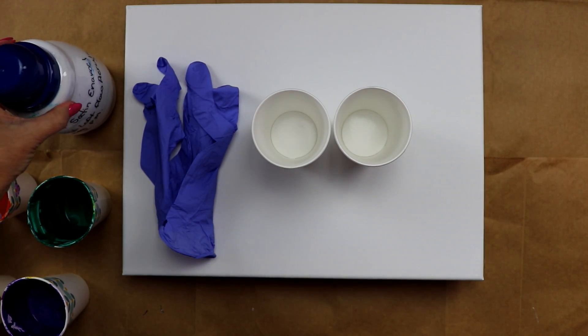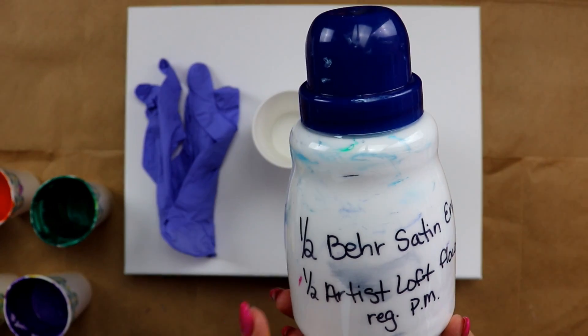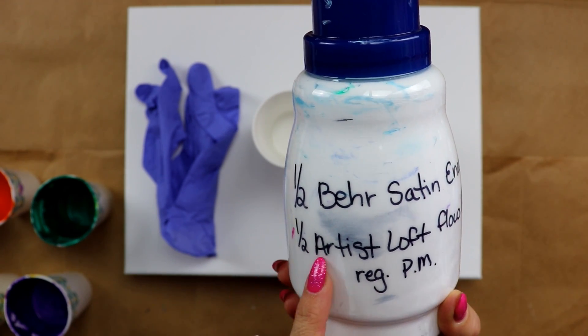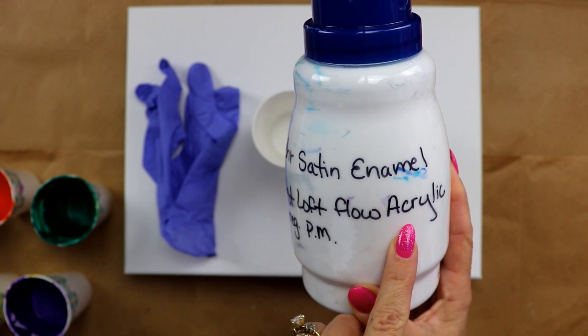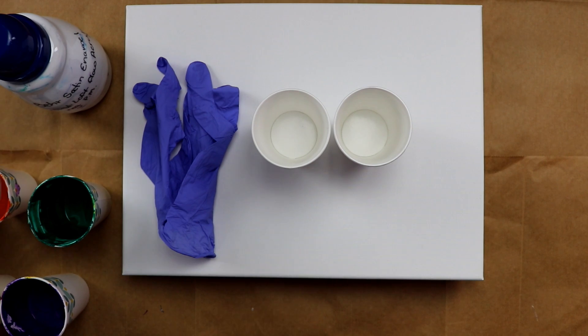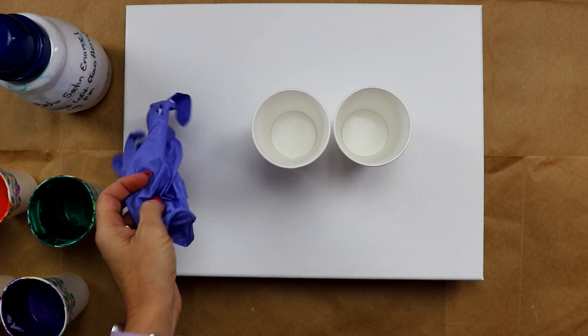And then I'm going to give my own little spin on it and I'm going to be using my Cloud Effect White, which is half bare satin enamel and half Artist Loft flow acrylic with my regular pouring medium mixed in. All right, so I'm going to go ahead and get my gloves on and I'll be right back.